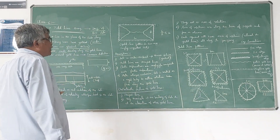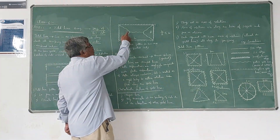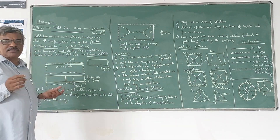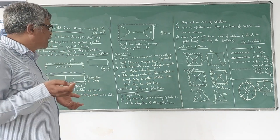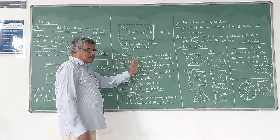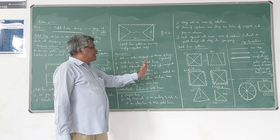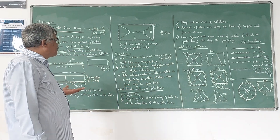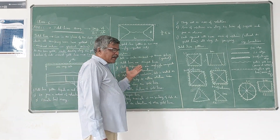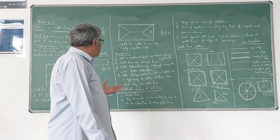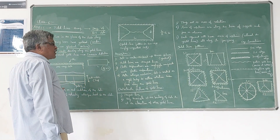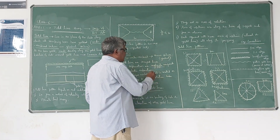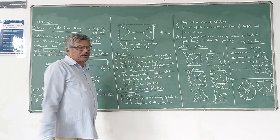In case of a two-way slab, the yield line pattern will occur as shown. Now there are some assumptions we make in yield line theory. First, the slab is under-reinforced, because it exhibits gradual ductile failure. Second, yield lines are straight lines, not curved lines. Third, elastic deformations are negligible compared with plastic deformations.